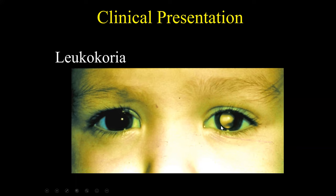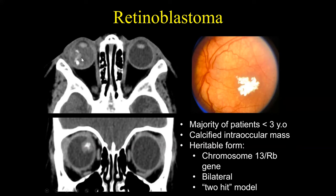Leukocoria is the cat's eye or the white eye — it means loss of the red reflex. The light comes in, goes through the pupil, hits the retina, and below the retina is the choroid, which is very vascular. When light comes back, because of that vascularity you get the red reflex. In leukocoria, you have absence of the red reflex and get this white appearance, due to some type of mass in the globe that prevents the light from hitting the retina and choroid. The most common cause of an intraocular mass in a child is retinoblastoma.